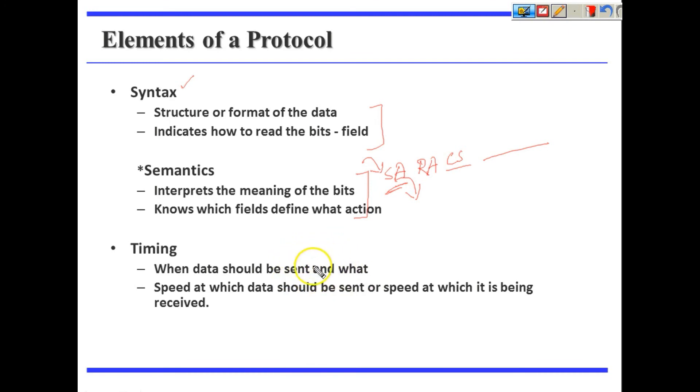You may consider a scenario where a sender is sending a huge amount of data to the receiver, but the receiver is not able to accept or to consume all the data. Then what will happen in that case - the data will be lost. So it is defined by the protocol. They must have to agree on what is their capacity, what capacity of the receiver so that the sender can send the data accordingly.